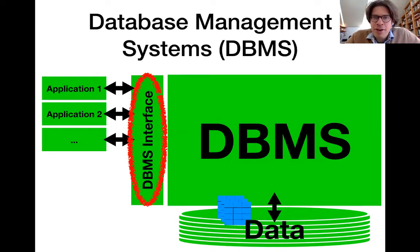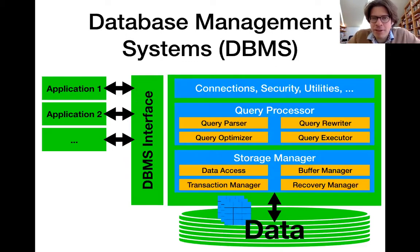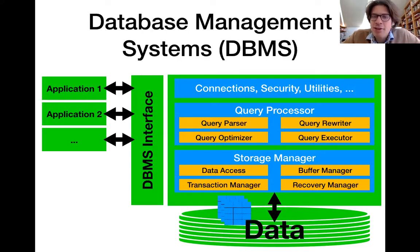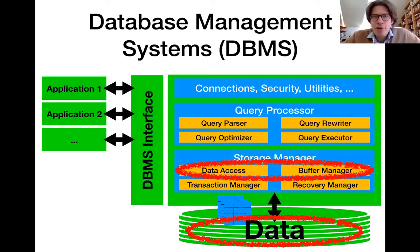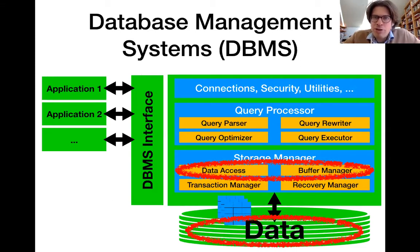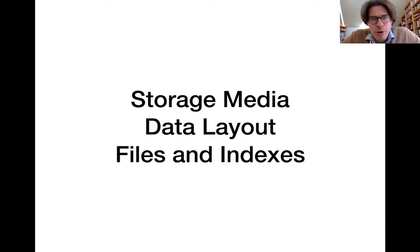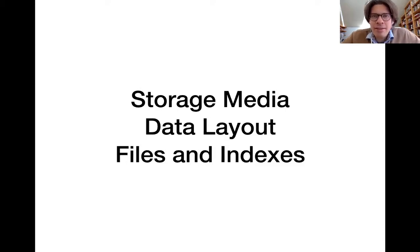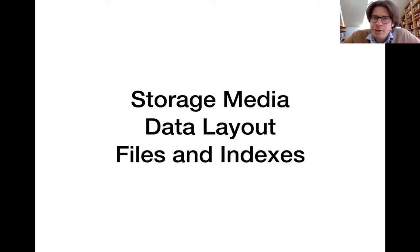After discussing the interface, we're going to open up the database management system and look at the different components that allow it to manage and process your data. First, we're going to discuss about the way in which your data is stored and how we can access it efficiently. We'll discuss storage media such as hard disks, their properties, and how to store data on them efficiently. We're also going to discuss specific access methods such as indexes, which allow you to very efficiently find specific data that you're looking for.